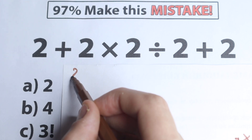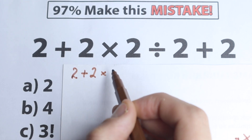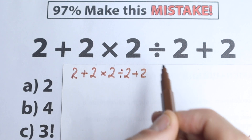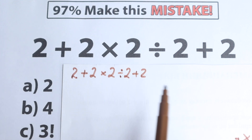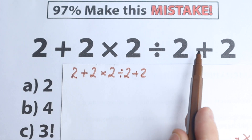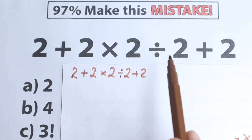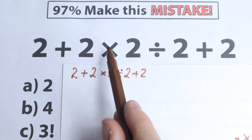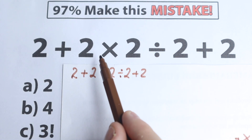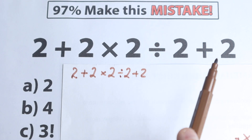I just wanted to rewrite this question: we have 2 plus 2 times 2 divided by 2 and plus 2. So right here we have a lot of math operations — addition, multiplication, division, and once more addition. The main question is: what do we need to start with? Add first, then multiply? Left to right? Right to left? Start from multiplication, division, or addition? As you can see, a lot of combinations are possible.